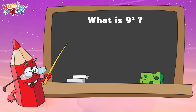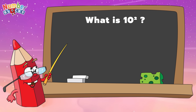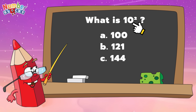What is 9 squared? Is it letter A, 64, letter B, 81, or letter C, 100? If your answer is letter B, then you're right. 9 squared is equals to 81. What is 10 squared? Is it letter A, 100, B, 121, or letter C, 144? And the right answer is letter A, 100. 10 squared is equals to 100.